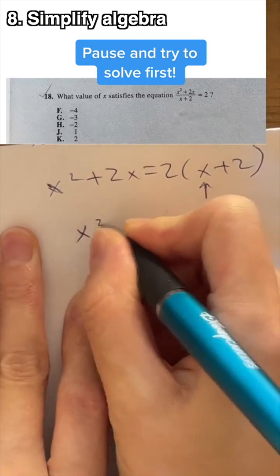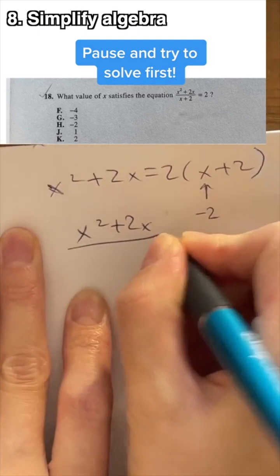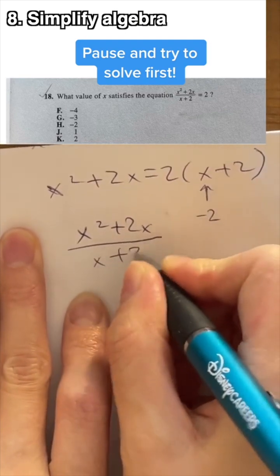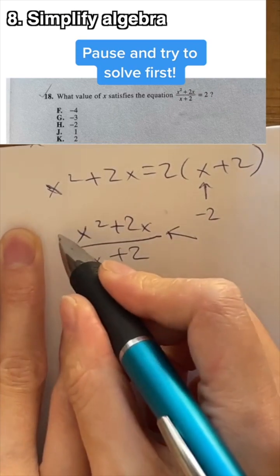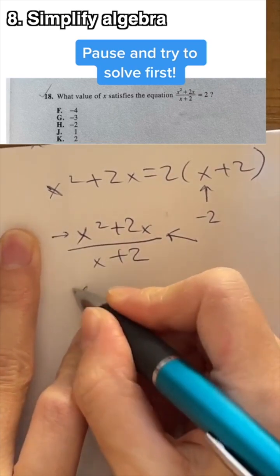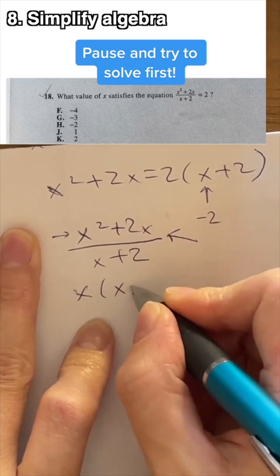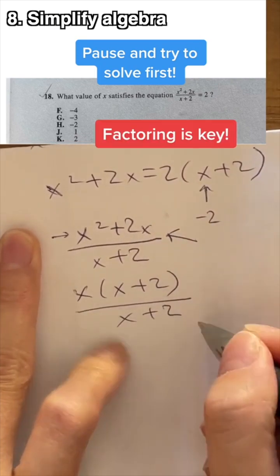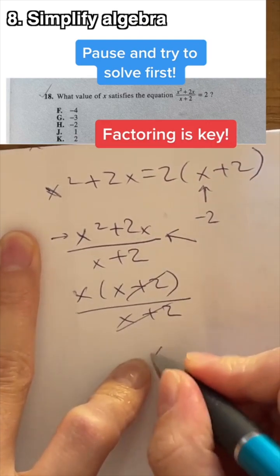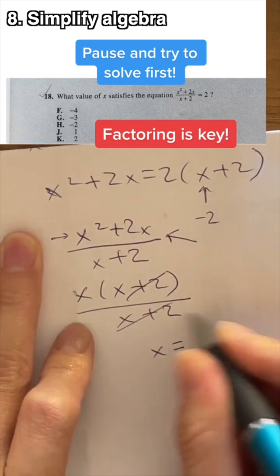So with this expression on the left-hand side, you should always look to factor first. And you can factor out an x here. So we have x times x plus 2 with x plus 2 here, which means you can cancel them and directly get that x equals only positive 2.